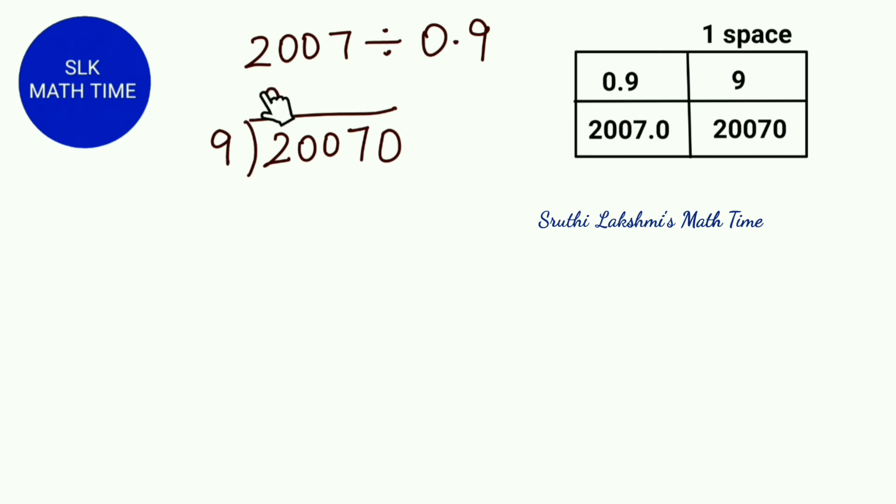9 into 0 is 0. 2 minus 0, then we bring down 0. 9 into 2 is 18. 20 minus 18 is 2. Then we bring down 0. 9 into 2 is 18, so 20 minus 18 is 2. Next we bring down 7.